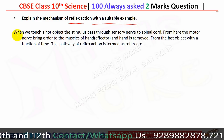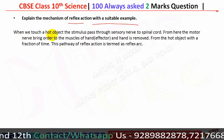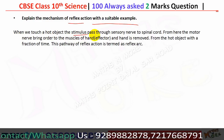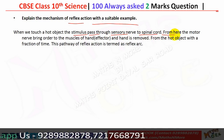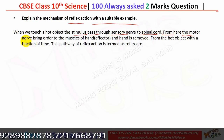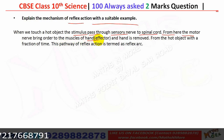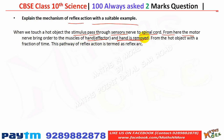The mechanism of reflex action: when we touch a hot object, the stimulus passes through the sensory nerve to the spinal cord. From there, the motor neuron sends an order to the muscles of the hand — the effector — and the hand is removed from the hot object. This pathway of reflex action is termed the reflex arc.